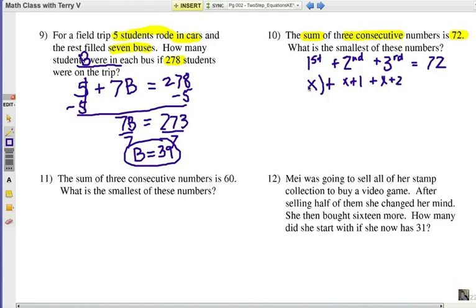You can put parentheses in here to make it a little easier to see. It's not a bad idea with these consecutive number problems, but basically that's the first number, that's the second number, that's the third number. 72 is what we have on the right.